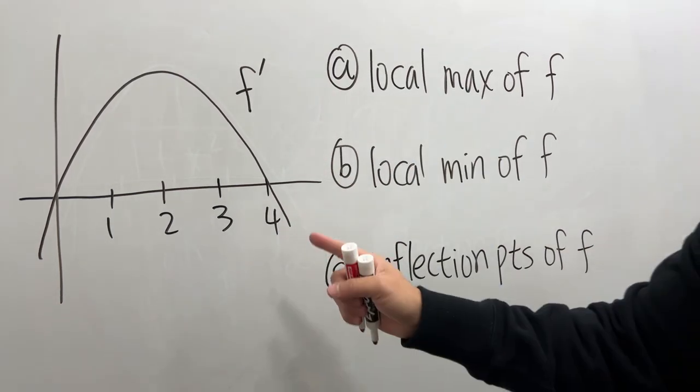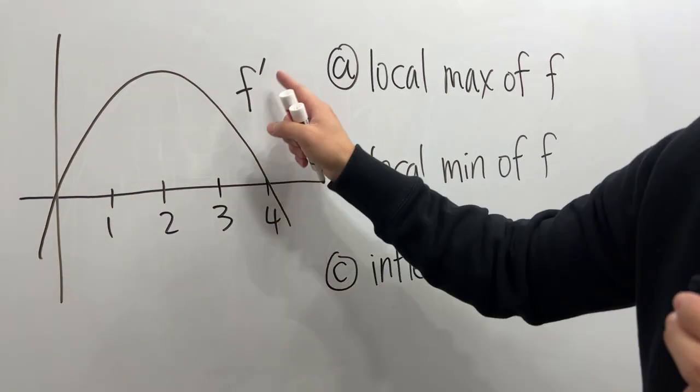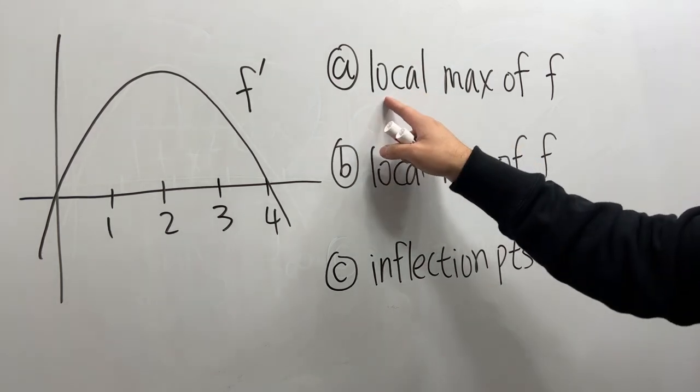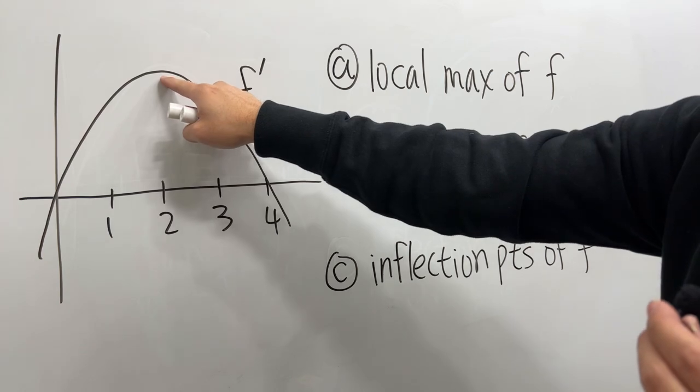Okay, classic AP Calculus tricky question. We are given the derivative, so this is f prime, and the questions are about the original. First, let's find the local max of the original. The answer is not 2—that's too easy.